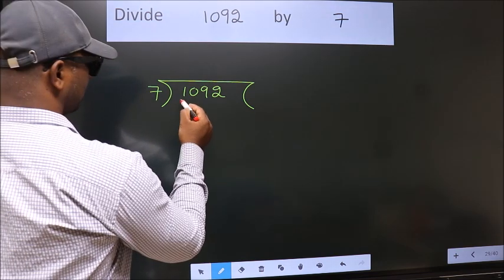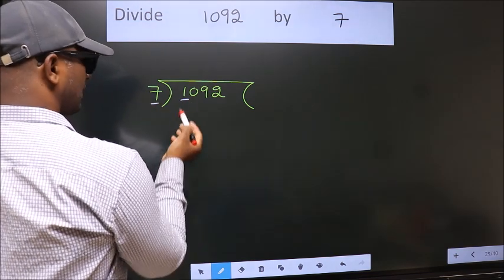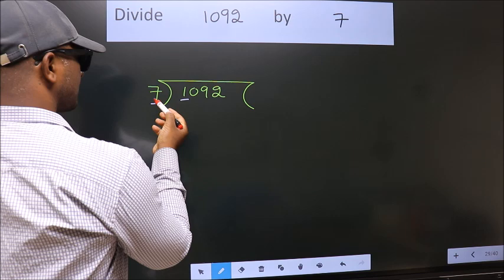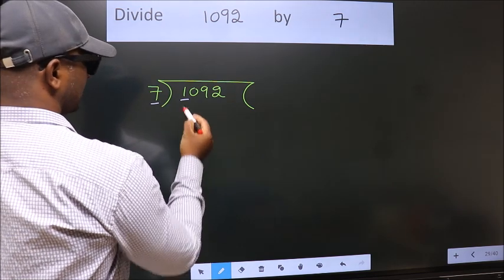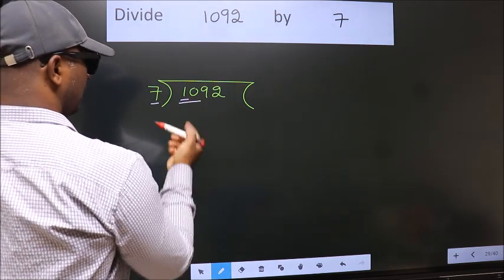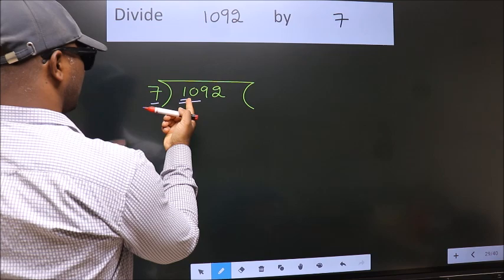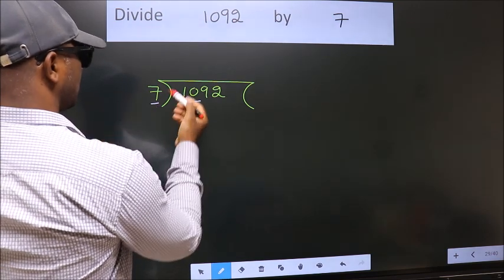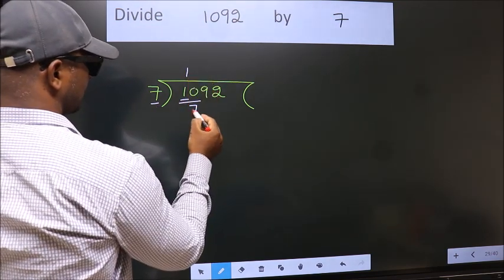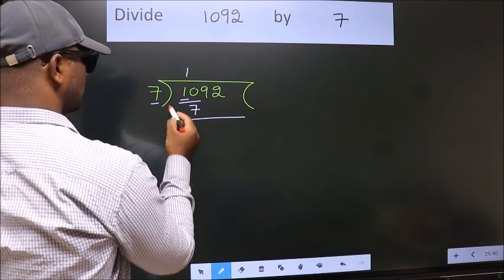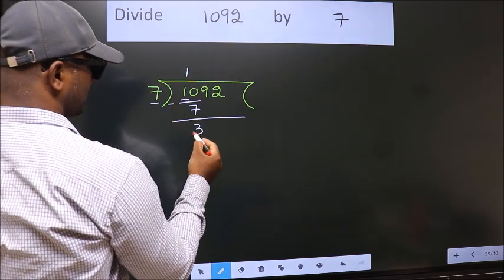Here we have 1, here 7. 1 is smaller than 7, so we should take 2 numbers: 10. A number close to 10 in the 7 table is 7 once, which is 7. Now we should subtract. We get 3.